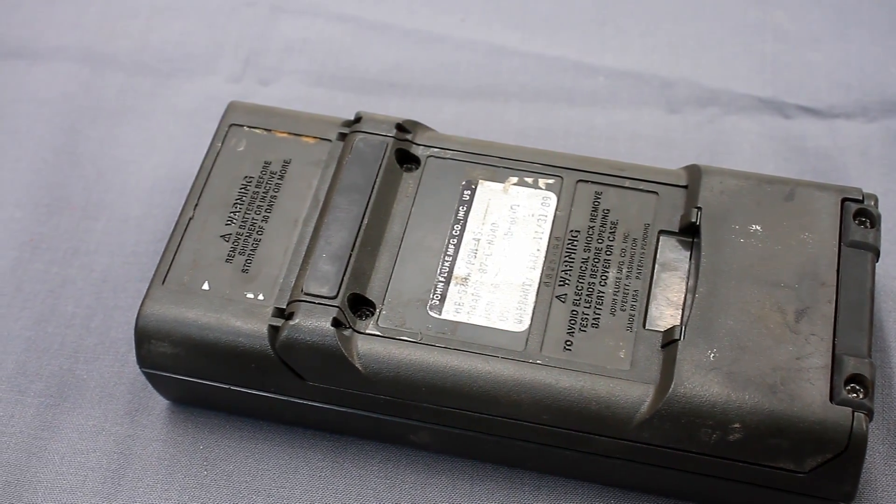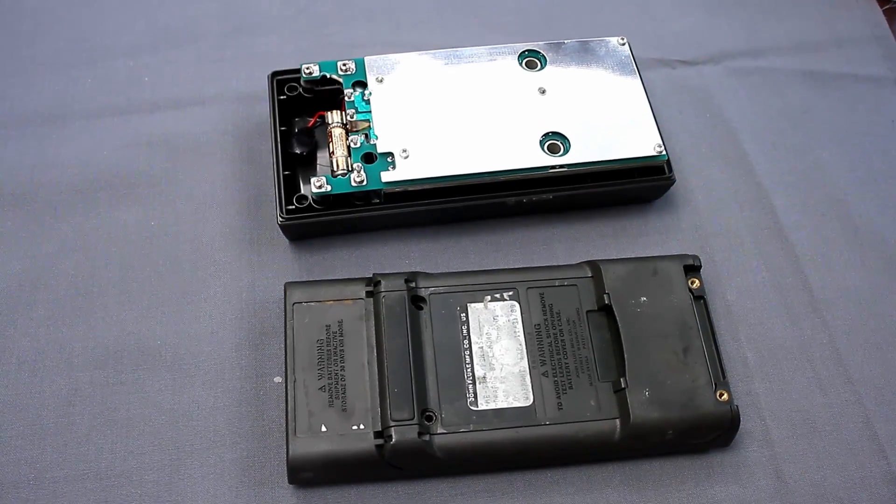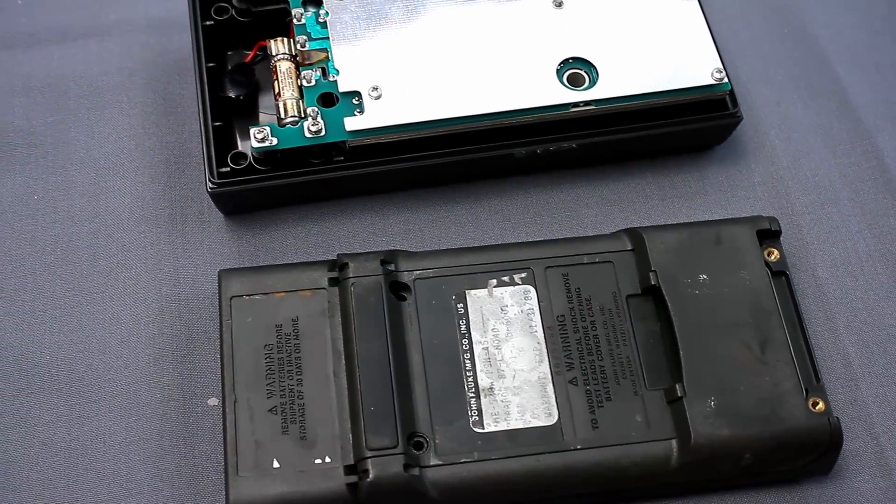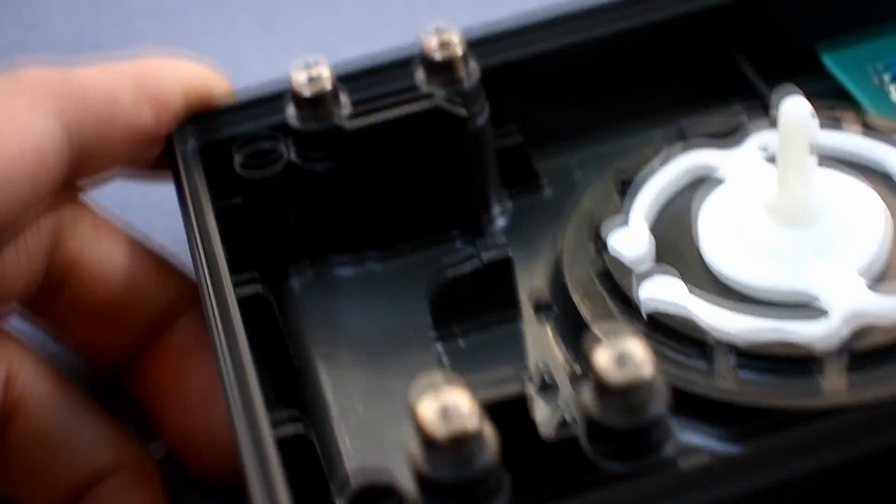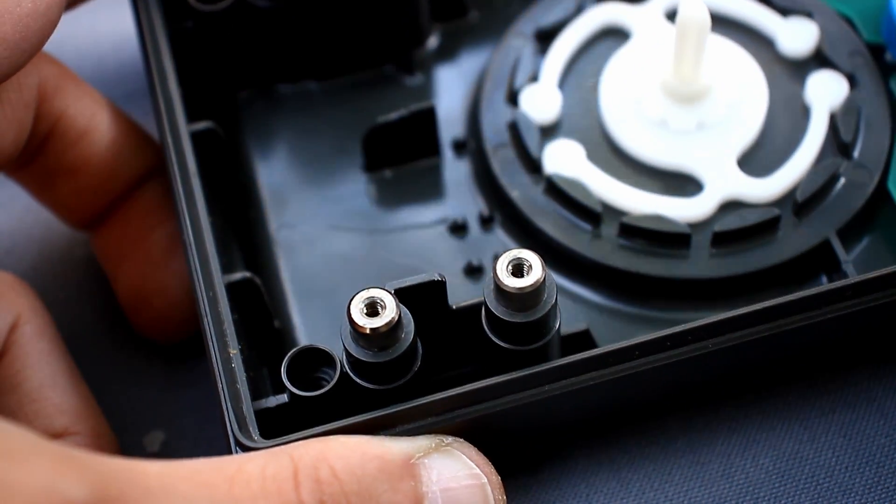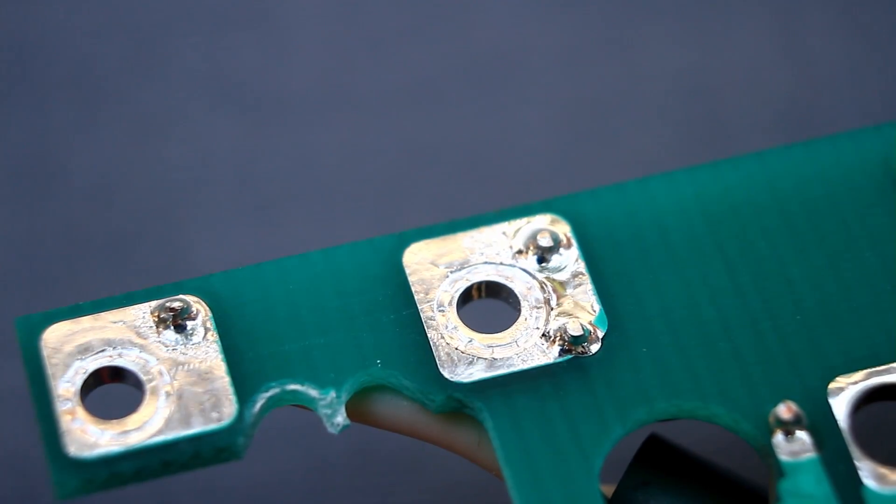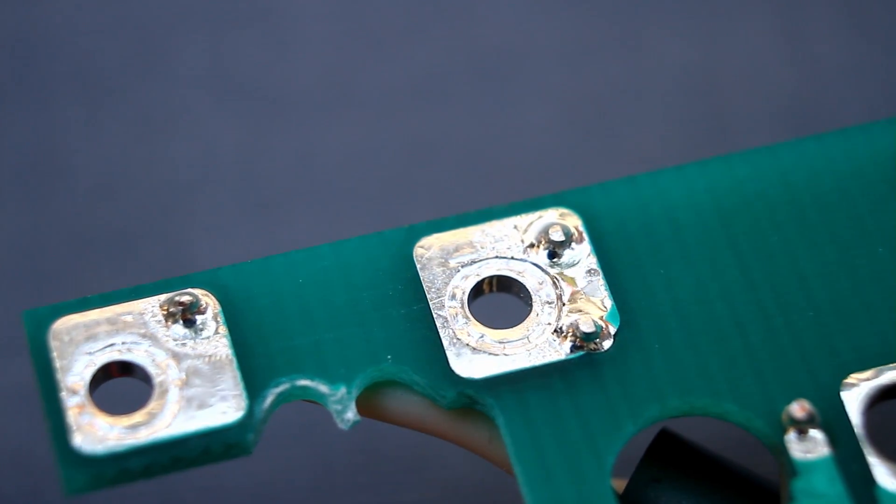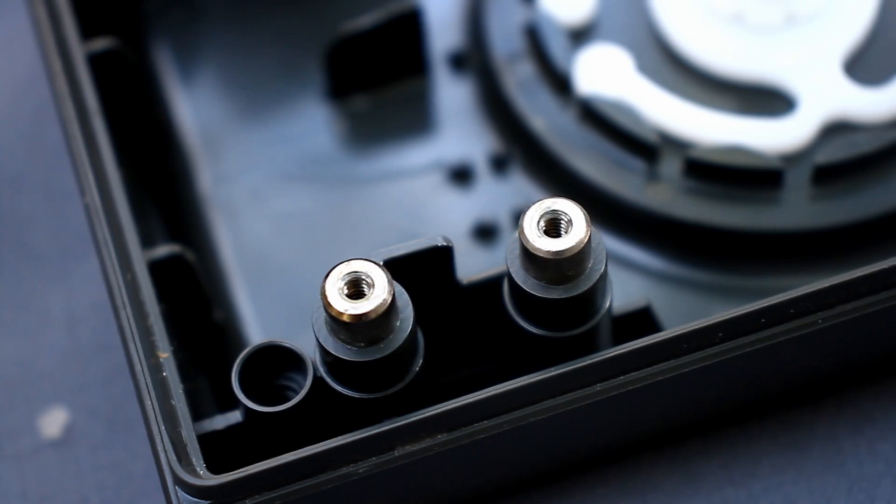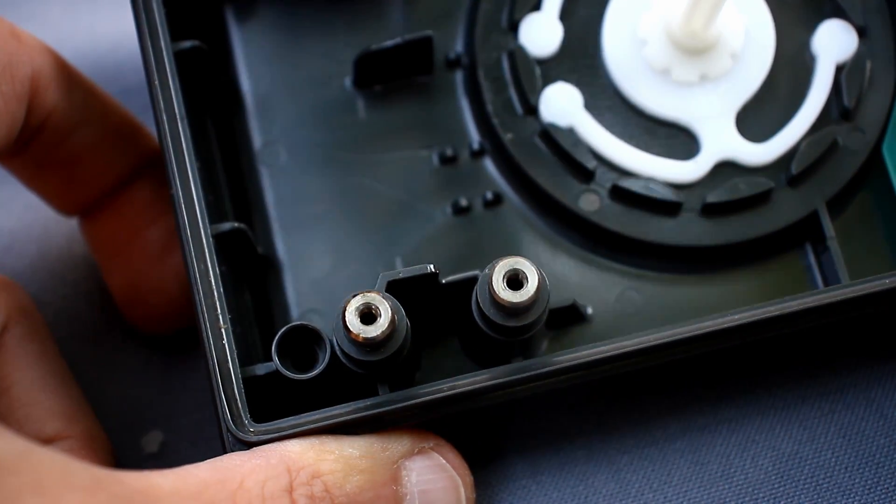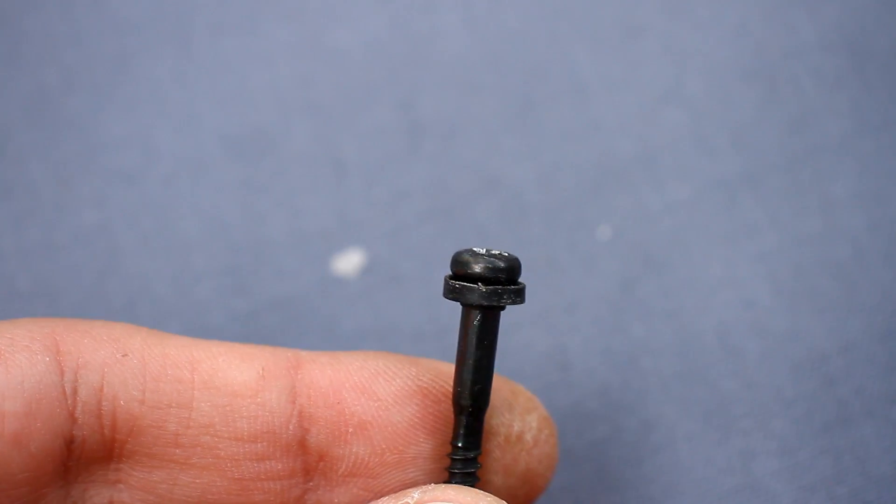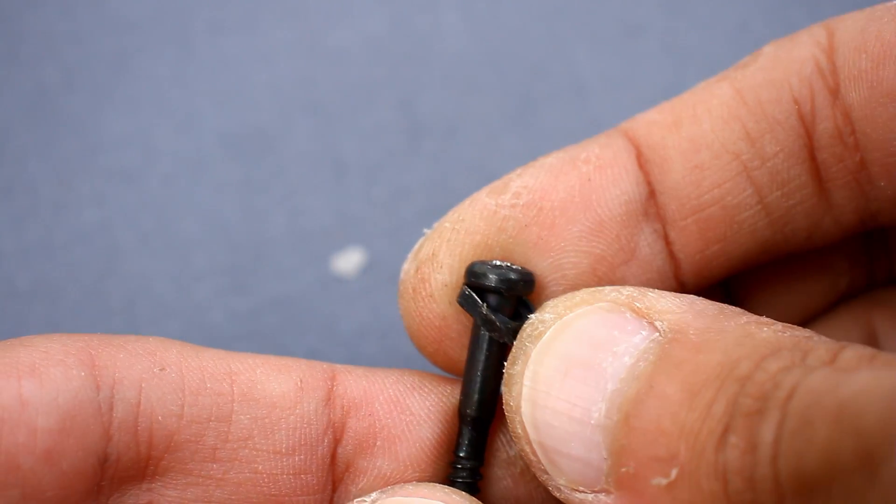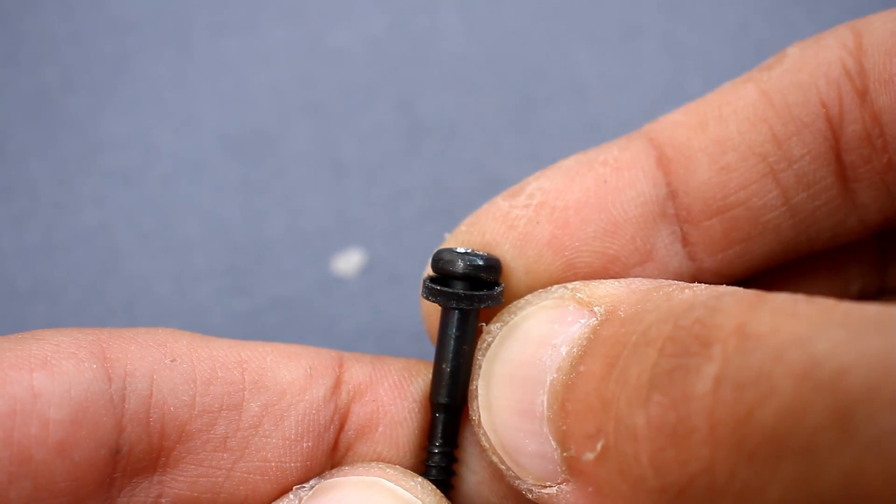Well, now we disassemble the multimeter for prevention and to study the feeling. Inside, we find a printed circuit board with a protective screen. Pay attention to the input terminals. In cheap multimeters, they are a thin sheet of metal with one flimsy conductor soldered to the board. Here, these are thick sleeves that are screwed to the board.